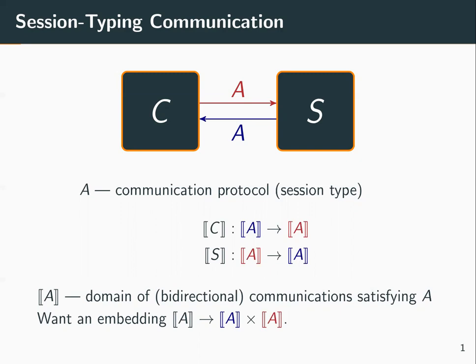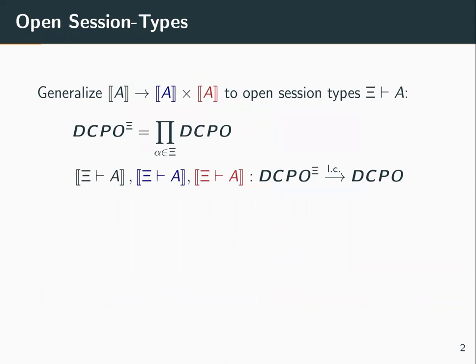Our goal is to give a semantics that captures recursive session types, so we must first capture open session types. Let's assume we have an open session type A that depends on some context ψ of type variables. We'll write DCPO^ψ for the ψ-indexed product of the category DCPO. Then A will denote three locally continuous functors from DCPO^ψ to DCPO.